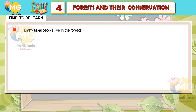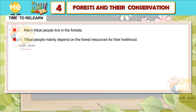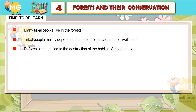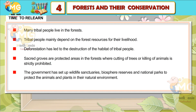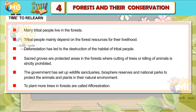Time to Relearn: Many tribal people live in the forests and mainly depend on forest resources for their livelihood. Deforestation has led to the destruction of the habitat of tribal people. Sacred groves are protected areas in forests where cutting of trees or killing of animals is strictly prohibited. The government has set up wildlife sanctuaries, biosphere reserves, and national parks to protect animals and plants in their natural environment. Planting trees to restore forests is called afforestation.